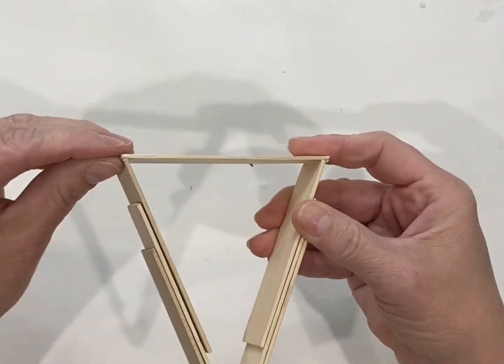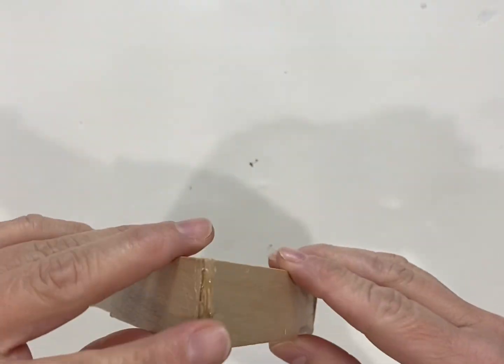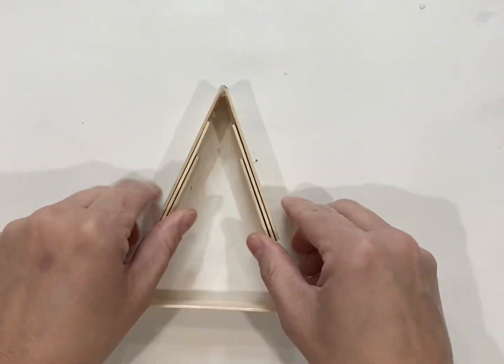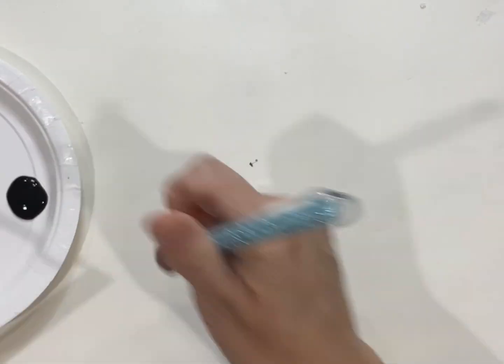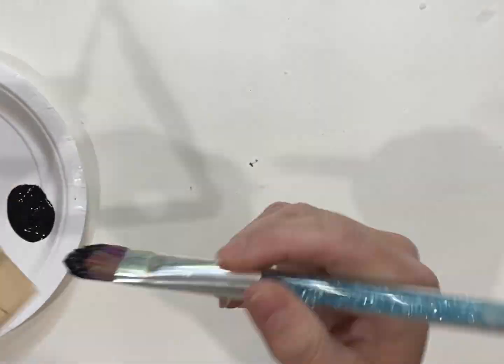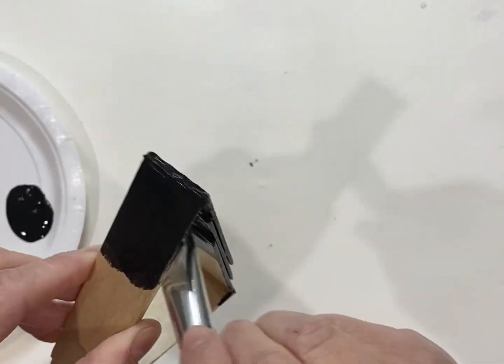The next step is I'm gonna paint it black—that's my choice of color. You can paint it whatever color you'd like. Paint the whole thing inside, outside, bottom, the whole thing.